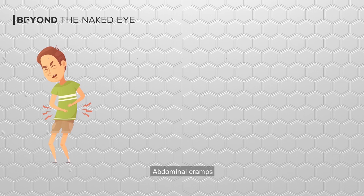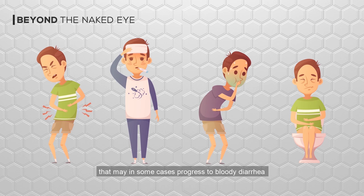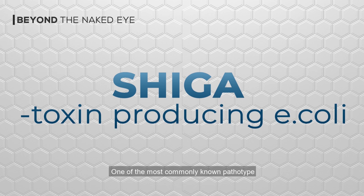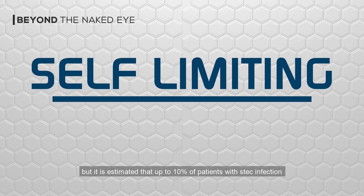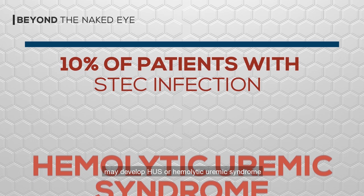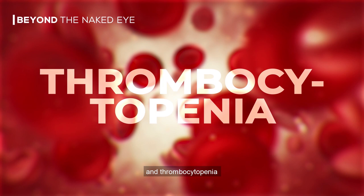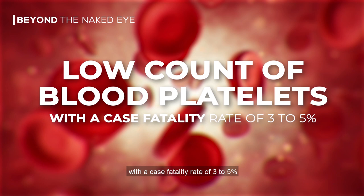Abdominal cramps, fever, vomiting, and diarrhea that may in some cases progress to bloody diarrhea or hemorrhagic colitis are the symptoms of diseases caused by Shiga toxin-producing E. coli, or STEC, one most commonly known pathotype. They say it is only self-limiting, but it is estimated that up to 10% of patients with STEC infection may develop HUS, or hemolytic uremic syndrome. It is characterized by acute renal failure, hemolytic anemia, and thrombocytopenia, or low count of blood platelets, with a case fatality rate of 3 to 5%.